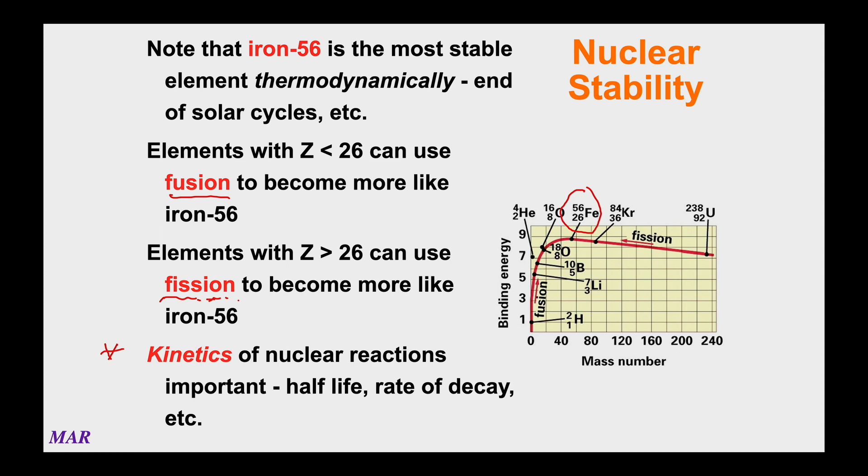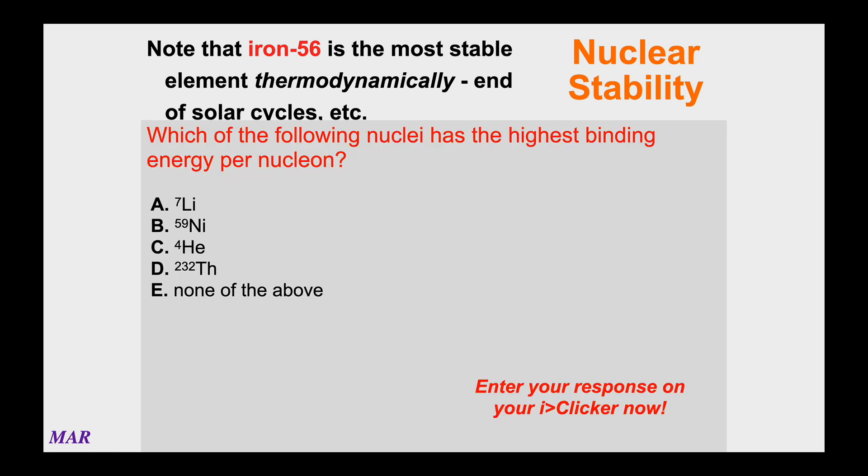This is the kind of question you might see. It says which of the following nuclei has the highest binding energy per nucleon. There are four atoms listed: lithium-7, nickel-60, helium-4, and thorium-232, and a fifth says none of the above. If you happen to be able to look up or you have a table of binding energies per nucleon, you can look these four up and see which one has the highest binding energy per nucleon. However, if you don't have a table of binding energies per nucleon next to you, what you can do is think about which of those atoms is closest to iron-56.